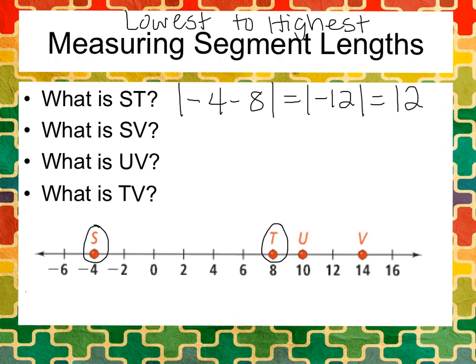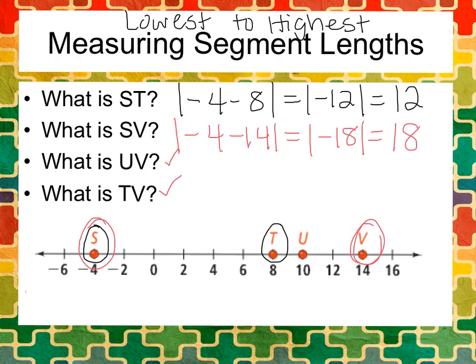Let's look at SV. We have S at negative 4 and V at positive 14. Absolute value, I subtract the two numbers. So negative 4 minus 14 equals the absolute value of negative 18 and we always make it positive because of absolute value bars. Now notice that SV has a longer distance than ST. On your own you're going to do UV and TV and then label the segments from lowest to highest.